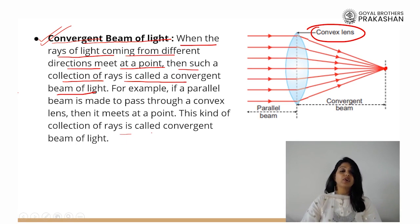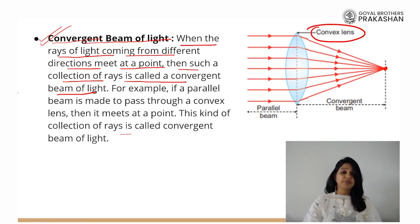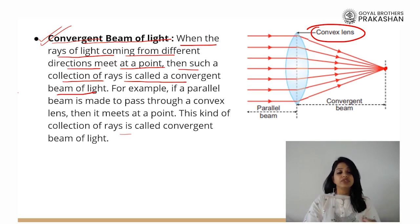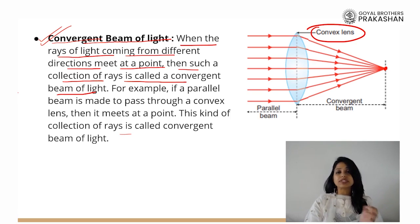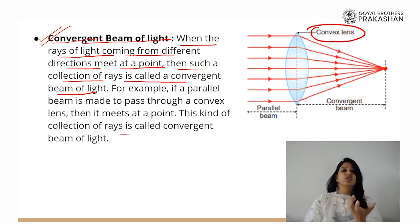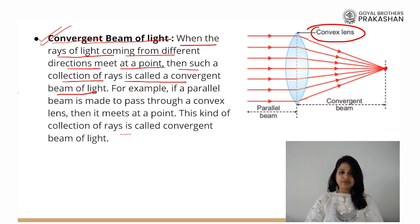So we have learnt about different mediums through which light can pass or not pass, and we also learnt about various sources — point source and extended source — and what are rays of light, beams of light, and the different types of beams of light.